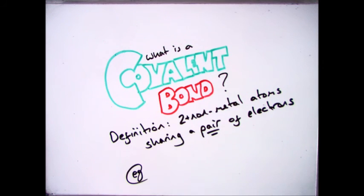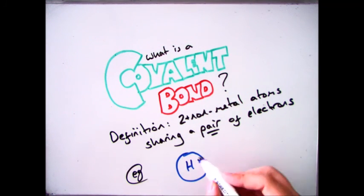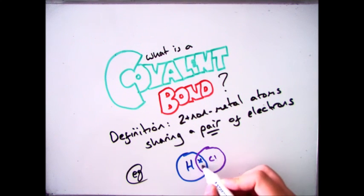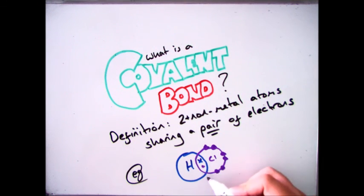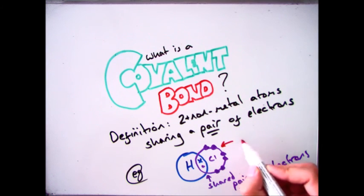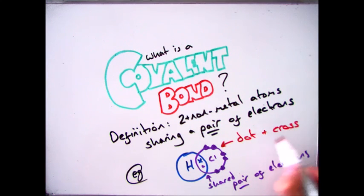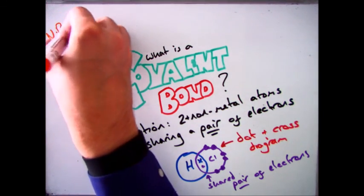An example of that is hydrochloric acid, which is HCl. Hydrogen has one electron in the outer shell, and chlorine has seven electrons in the outer shell. So they overlap, and what I've drawn in the middle is a shared pair of electrons. Both of them now have a full outer shell — chlorine has eight, and hydrogen has two, which is all it needs in that first shell. And this is called a dot and cross diagram.